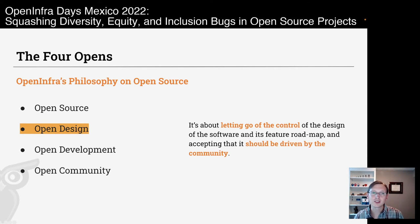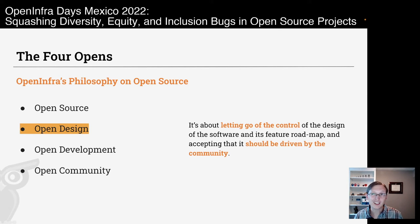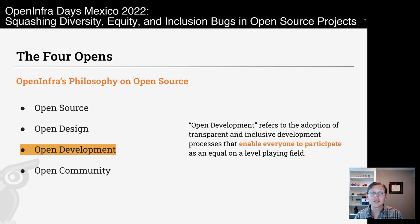In an OpenInfra project, we welcome everyone's requirements. What do you need in your work? What do you need this software to do? Let's have those voices shape what the software is going to be and what we are developing. So the focus is now shifting from requirements about the software to people and what they need. How do we make sure people can actually bring in their own needs? This is through open development, the third open.